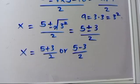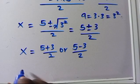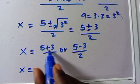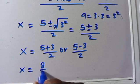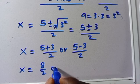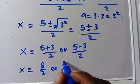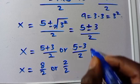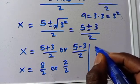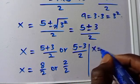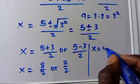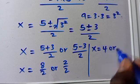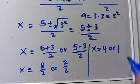So we have 5 plus 3 equals 8, and 8 over 2 equals 4. And 5 minus 3 equals 2, and 2 over 2 equals 1. So x equals 4 or x equals 1.